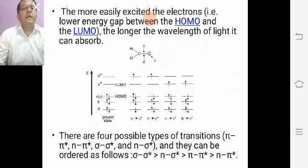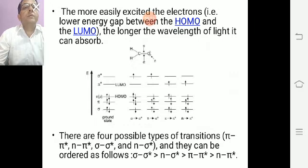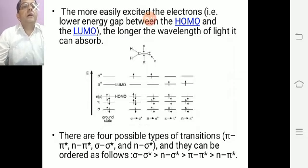Here is the example of formaldehyde, where sigma and pi bonds and non-bonding electrons are present. In the ground state, there are two electrons in sigma, two in pi, and two in non-bonding orbitals. When irradiated by UV light, an electron from the sigma orbital flips into the anti-bonding orbital sigma*, and the transition is known as σ→σ*. When an electron flips from non-bonding to sigma*, the transition is called n→σ*. When an electron flips from pi to pi*, the transition is known as π→π*. And when a non-bonding electron flips into pi*, the transition is n→π*. In the ground state, the HOMO is the non-bonding orbital and the LUMO is the π* anti-bonding orbital.